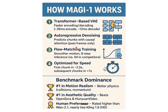Magi1 uses a transformer-based VAE model with auto-regressive denoising flow matching training, and it is optimized for speed. I'm not jumping into the deep technical details since we have already explained flow matching training in a previous video, so I'll skip this part.